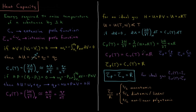We can express this in terms of molar heat capacities to make them intensive functions. Dividing by the number of moles N: Cp-bar equals Cp over N, and Cv-bar equals Cv over N.